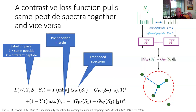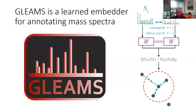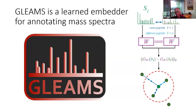We trained on 30 million spectra, corresponding to 11 billion pairs of examples. The system has a recursive acronym: GLEAMS — a Learned Embedder for Annotating Mass Spectra.